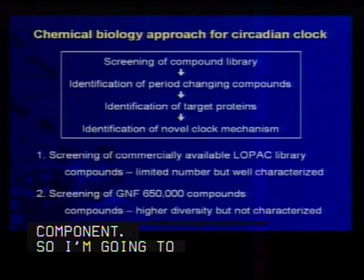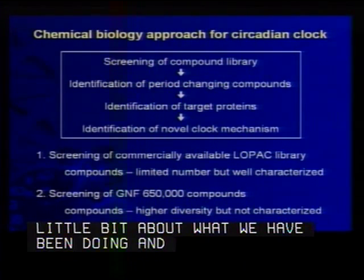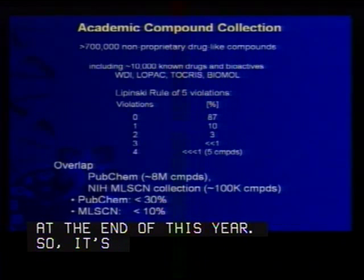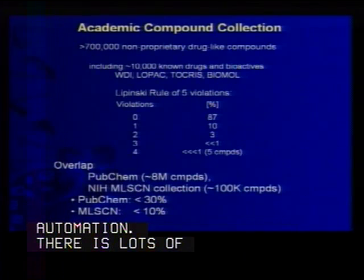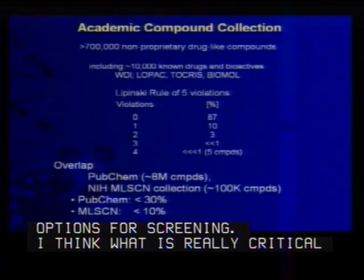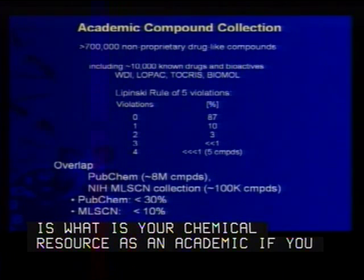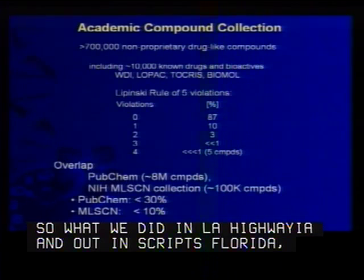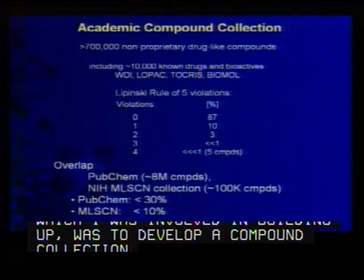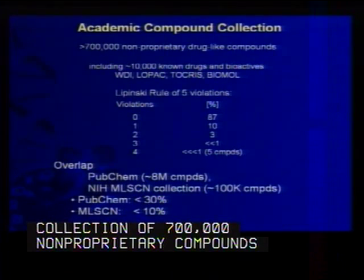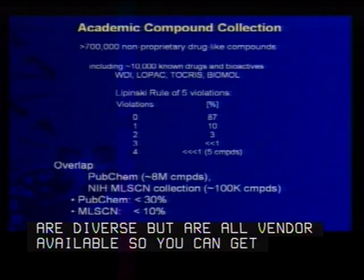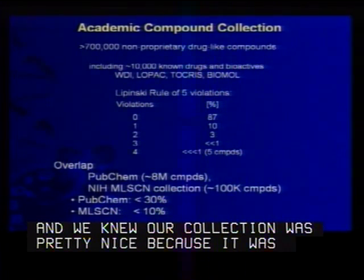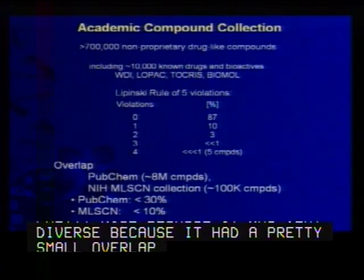A small part of our screen where we screened the Lopac library was just published in PNAS at the end of this year. What's really critical for an academic doing chemical screening is your chemical resource. What we did in La Jolla and at Scripps Florida was develop a compound collection of about 700,000 non-proprietary compounds that are remarkably diverse but all vendor-available. We knew our collection was pretty nice because it was very diverse — it had a pretty small overlap with the compounds being used in many of the MLSCN centers.